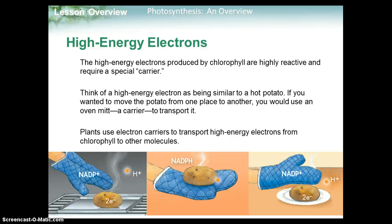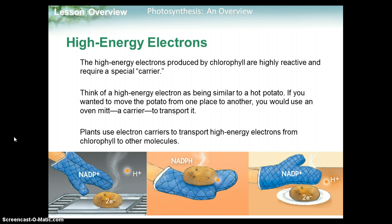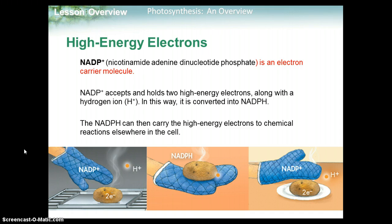The high-energy electrons produced by chlorophyll are highly reactive and require a special carrier. Think of a high-energy electron as being similar to a hot potato — if you wanted to move it from one place to another, you would use an oven mitt, or a carrier, to transport it. An example of an electron carrier would be NADP. It combines with electrons and hydrogen to become NADPH. Plants use electron carriers to transport high-energy electrons from chlorophyll to other molecules. NADP accepts and holds two high-energy electrons along with hydrogen, converting to NADPH, which can then carry the high-energy electrons to chemical reactions elsewhere in the cell.